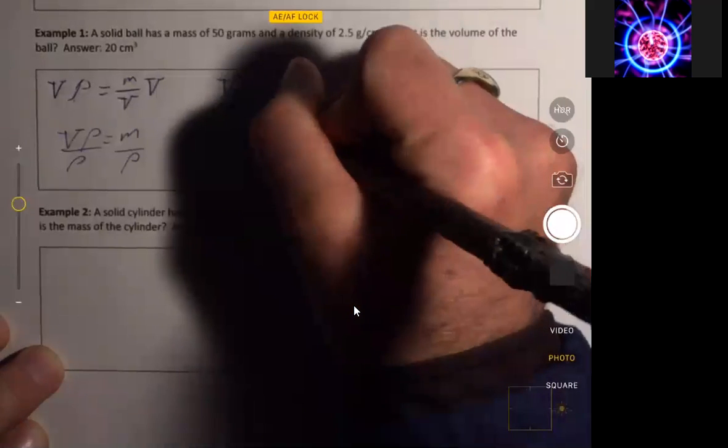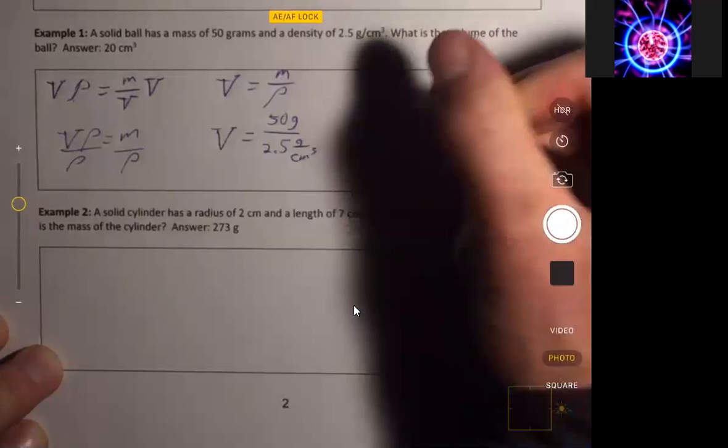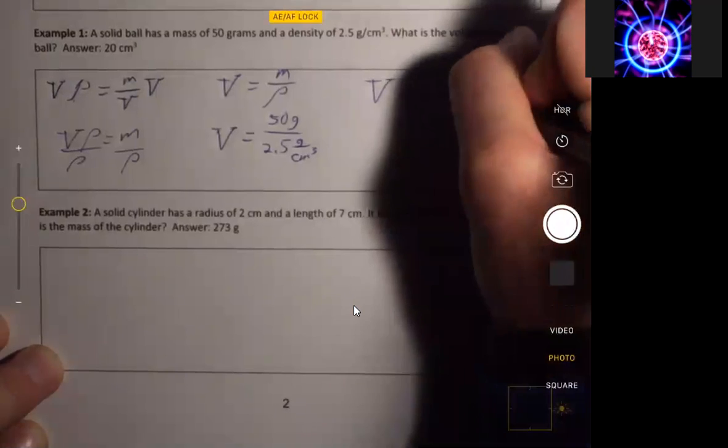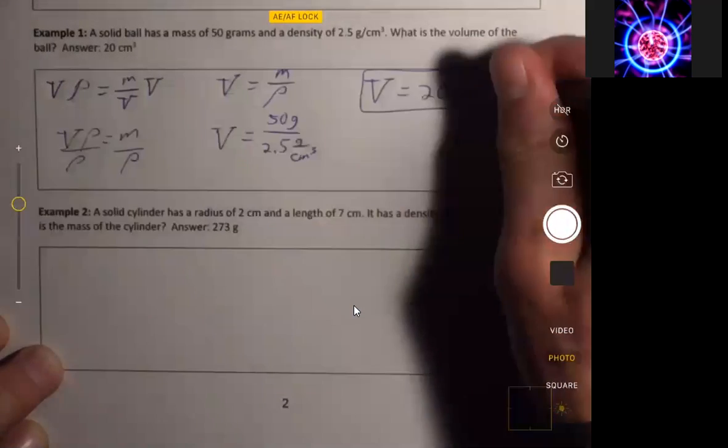So the volume is 50 grams divided by 2.5 grams per cubic centimeter, and that gives you your answer of 20 cubic centimeters.